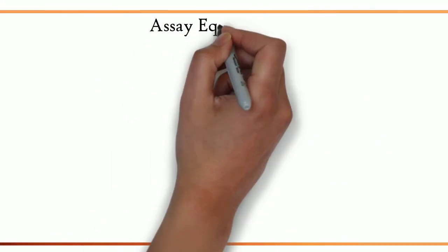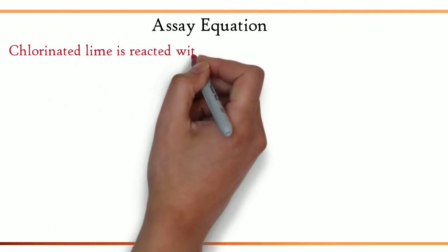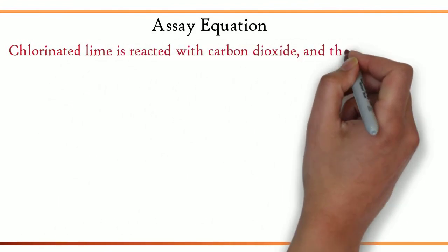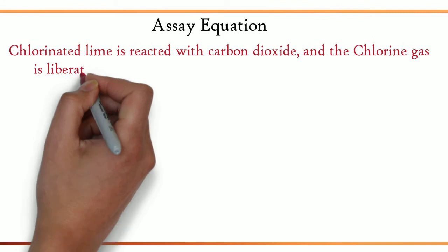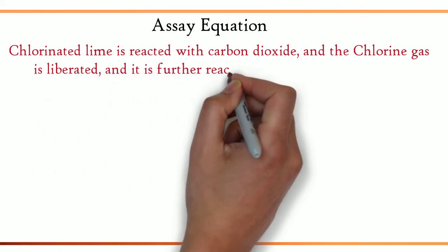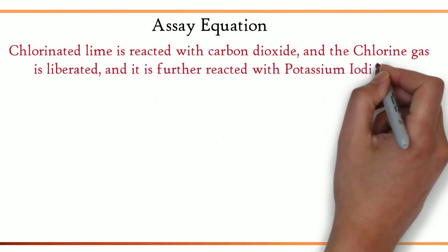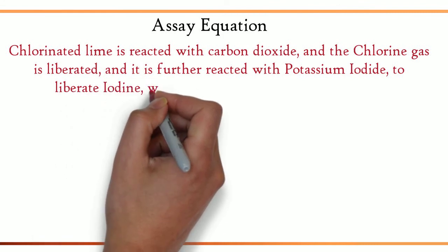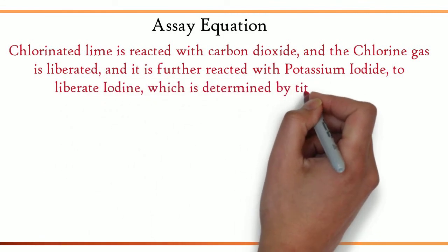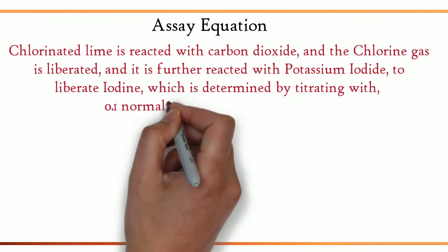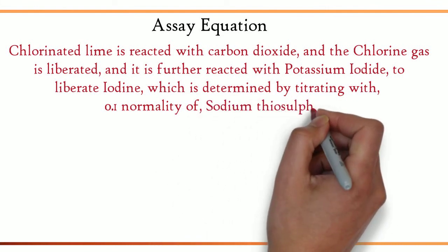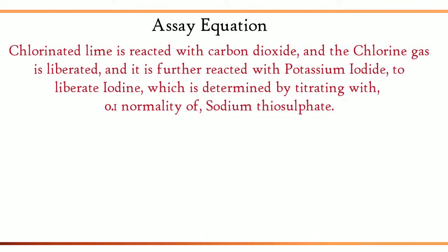Let us see the procedure. Chlorinated lime is reacted with carbon dioxide and the chlorine gas is liberated, and it is further reacted with potassium iodide to liberate iodine, which is determined by titrating with 0.1 normality of sodium thiosulfate.